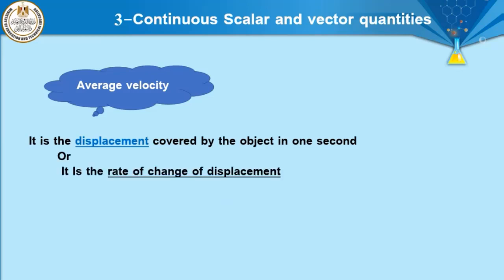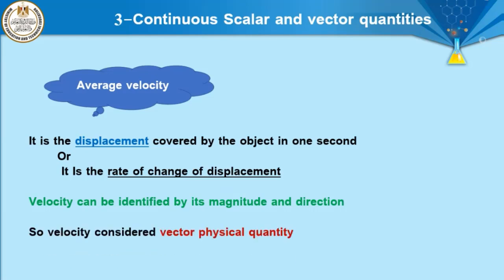Another definition of velocity: it is the rate of change of displacement per unit time. Velocity can be identified by its magnitude and direction because velocity is defined by displacement, and since displacement has direction, velocity has the same direction as displacement. Therefore, velocity is a vector physical quantity — it can be defined by magnitude and has direction.